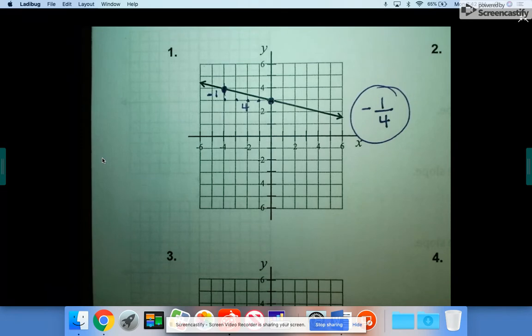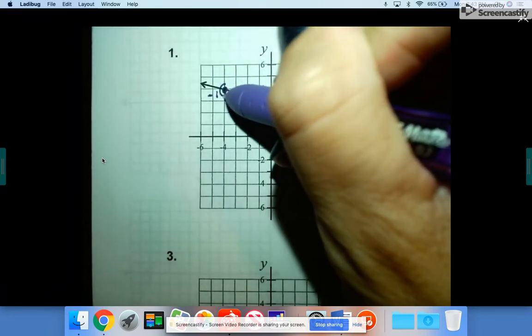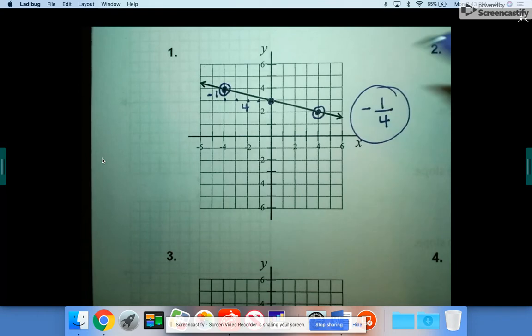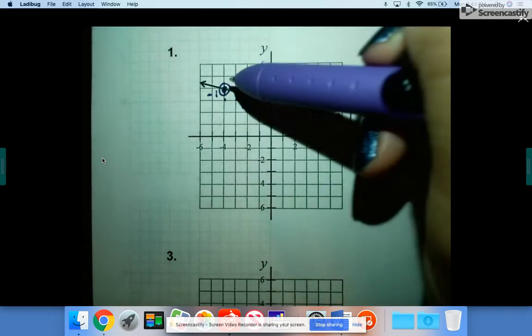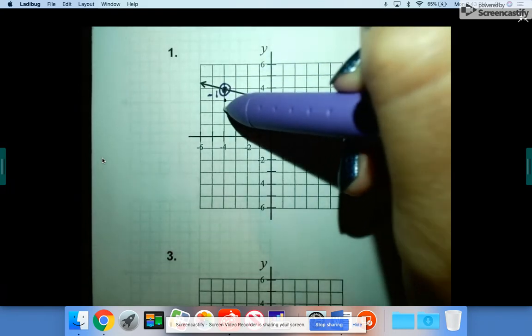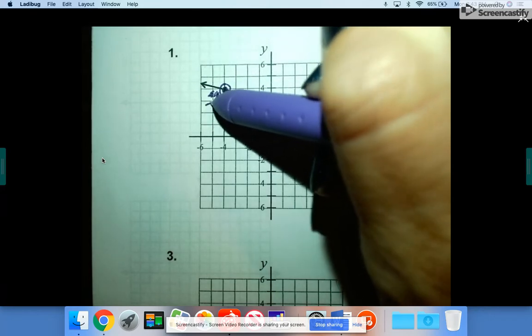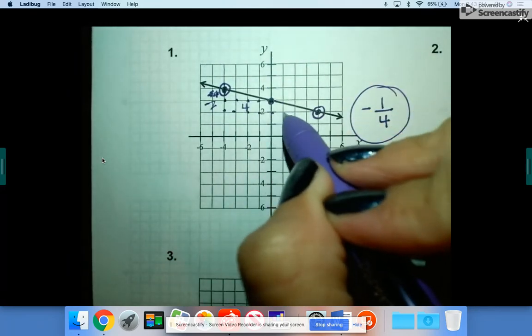Just real quick, out of curiosity, if you had picked this point and this point, let me emphasize them. If you had picked these two points, you would have still got the same answer. You would have just gone down two. So instead, that would have been down two over one, two, three, four, five, six, seven, eight.